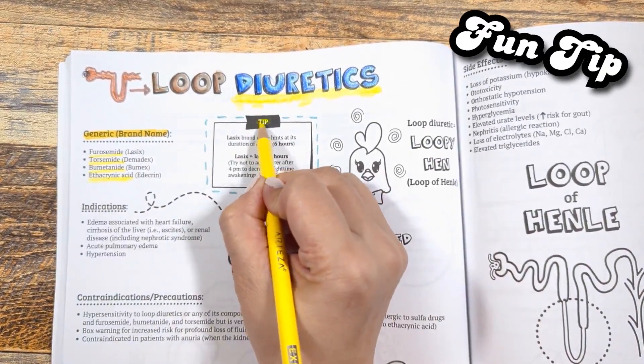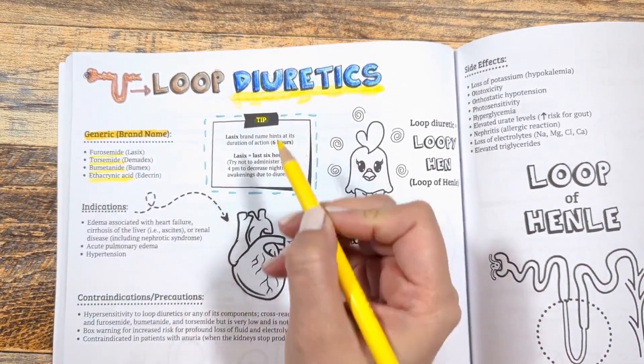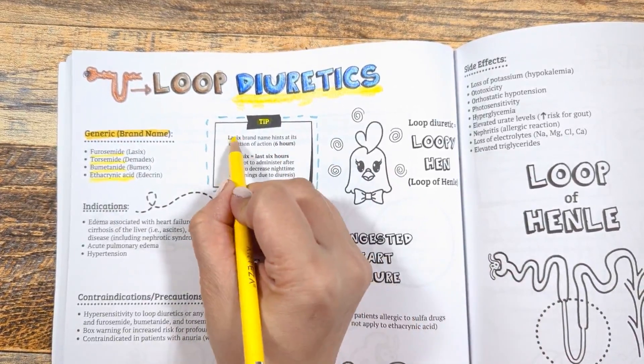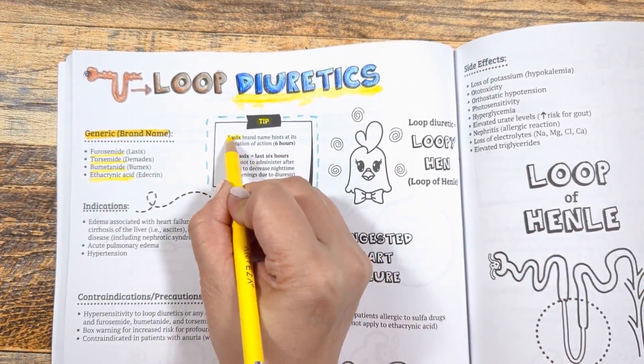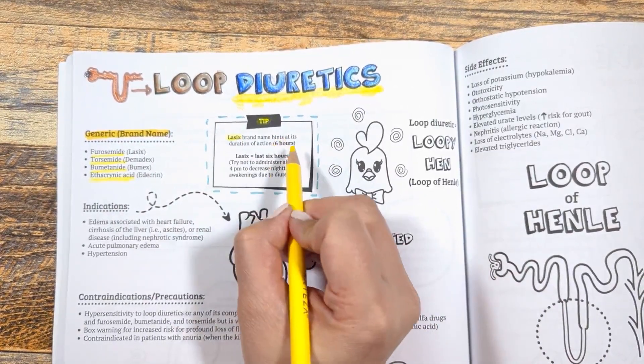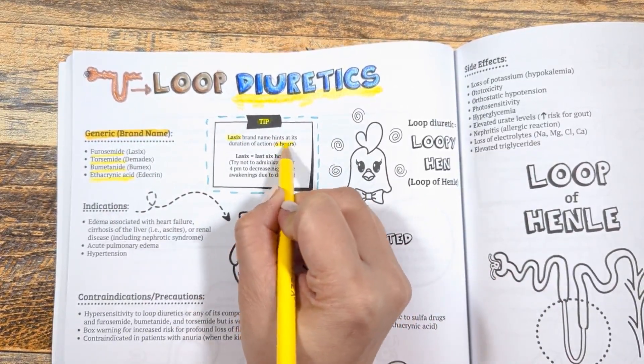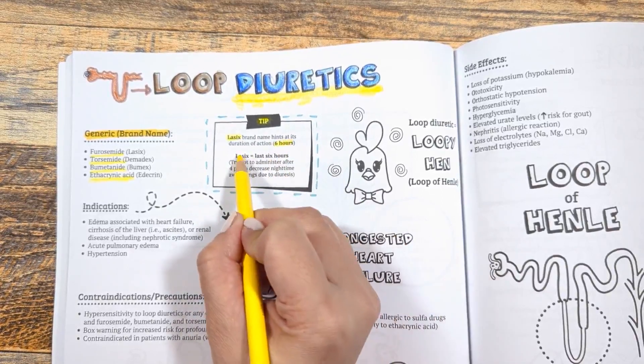Ethacrynic acid is the only loop diuretic in the US market that doesn't contain a sulfonamide substituent and can be used in patients with a true sulfonamide allergy.